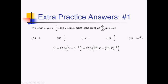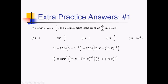We've got a chain rule going on — derivative of the outer function, derivative of tan of something, that's going to be secant squared of something. In this case, secant squared of ln of x minus ln of x to the negative one, times the derivative of the stuff inside. Going from left to right, derivative of ln of x is going to be 1 over x. And for this next term, using the power rule, that's going to be plus ln of x to the negative two. But now I still need to multiply by the derivative of ln of x itself, which is 1 over x.